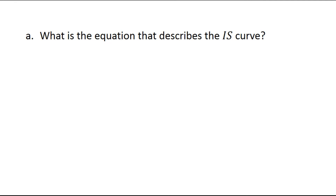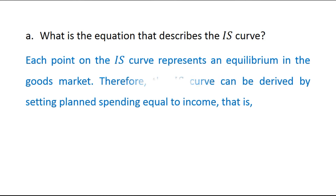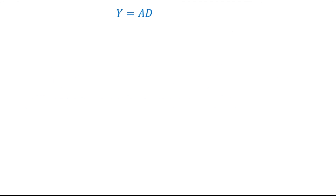The first part asks: what is the equation that describes the IS curve? Each point on the IS curve represents an equilibrium in the goods market. Therefore, the IS curve can be derived by setting planned spending equal to income, that is Y equals to AD. In the next step we can write Y equals to C plus I plus G — that is consumption plus investment plus government expenditure.